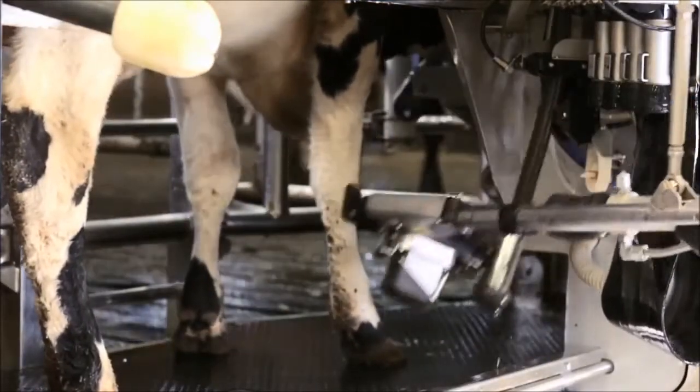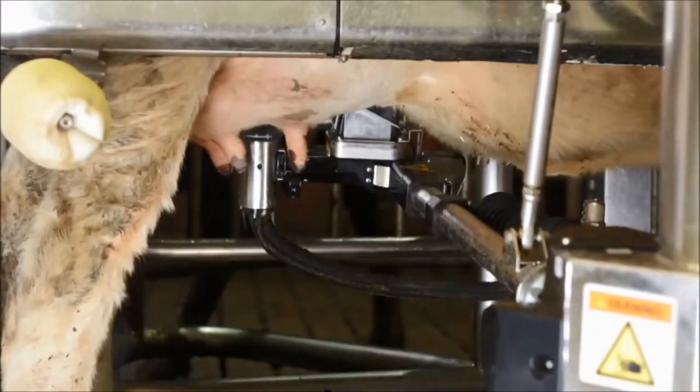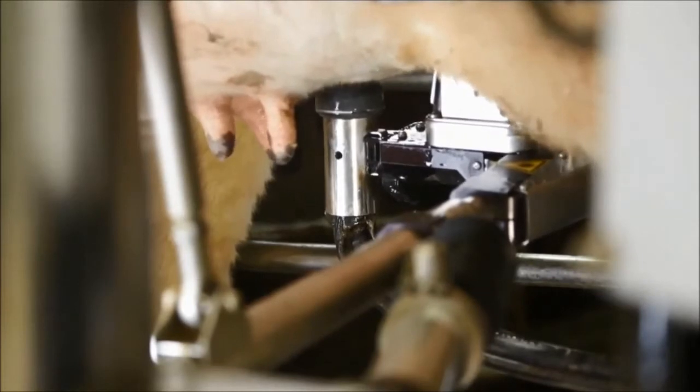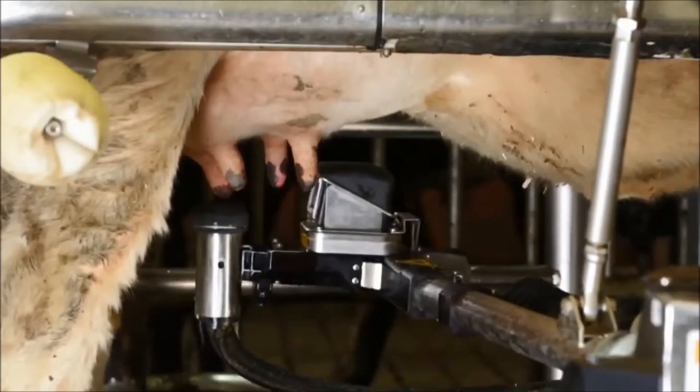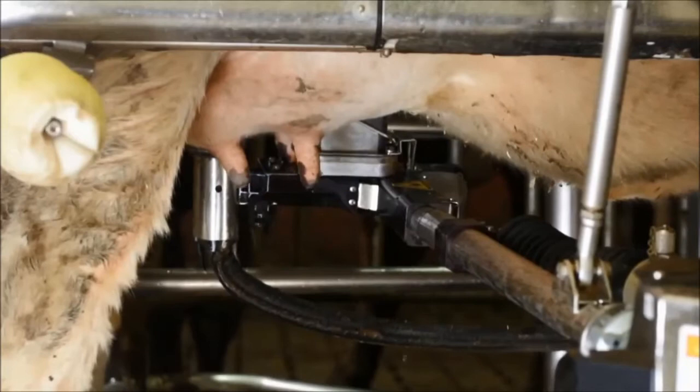Before milking, the teats are cleaned individually using a unique teat preparation cup. Only a few seconds are needed for optimum teat sanitation. The teat preparation cup has its own separate line, so no dirt or pre-milk ever makes contact with the main milk line to ensure the best milking hygiene.